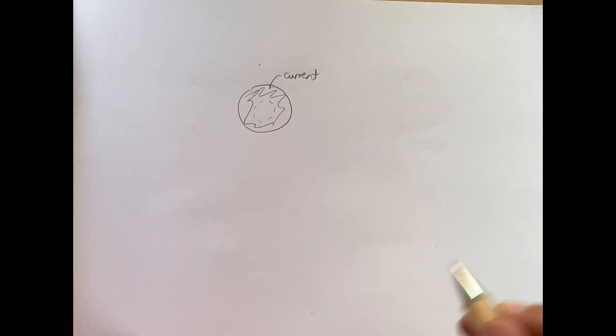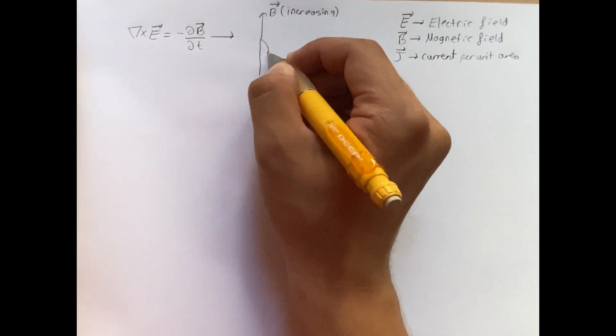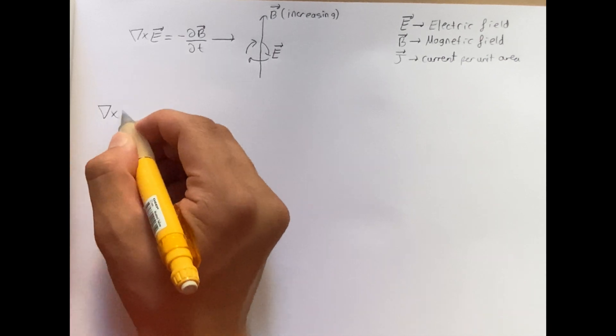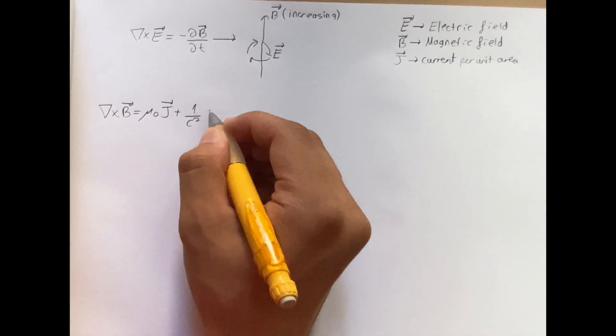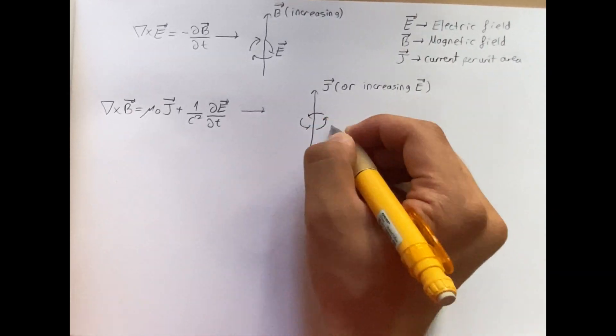It boils down to three equations. The first equation states that a changing magnetic field creates an electric field that surrounds the magnetic field. The second equation says that a current and a changing electric field creates a magnetic field that, again, surrounds the current and changing electric field.